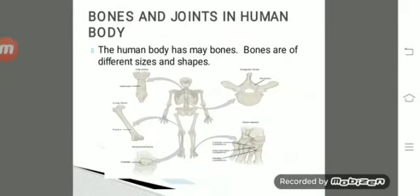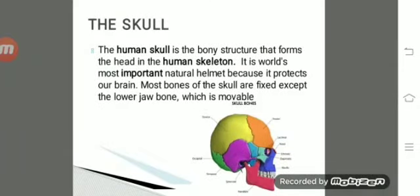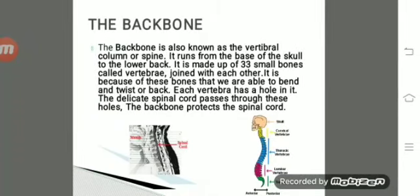Bones in the human body are of different sizes and shapes. Major bones include the skull, backbone, rib cage, hand, and leg bones. The human skull is the bony structure that forms the head. It is the world's most important natural helmet because it protects our brain. Most bones of the skull are fixed, except the lower jaw bone, which is movable.